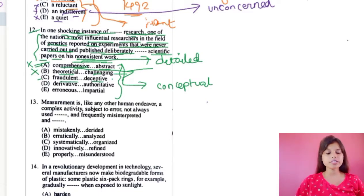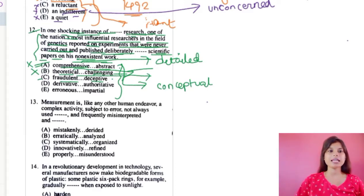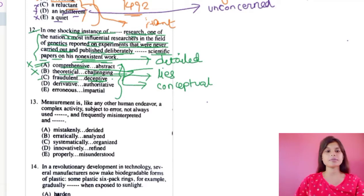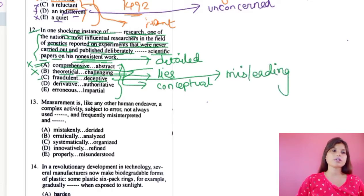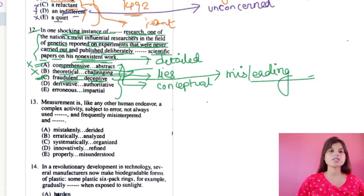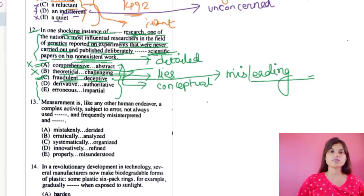Option C is 'fraudulent and deceptive.' Fraudulent means dishonesty, cheating, or fraud — involving deception, which means lies or false information. Deceptive means giving an impression that is not true — misleading. So 'in one shocking instance of fraudulent research' where 'deceptive scientific papers were published' — this fits the context very well. We keep this as a strong candidate while checking the remaining options.